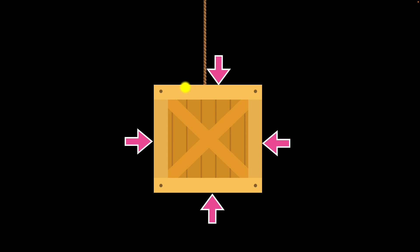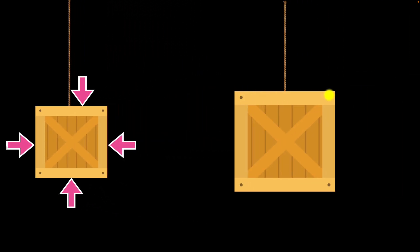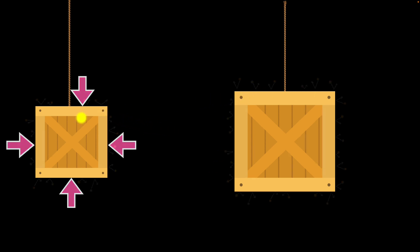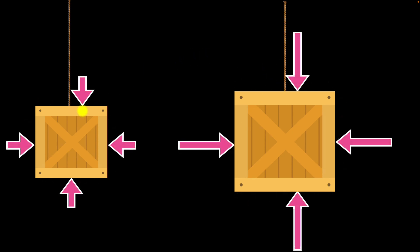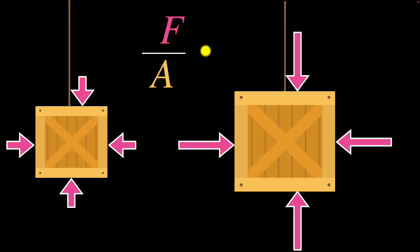To answer that question, let's think of a bigger box. Imagine the surface area here was twice as much as the surface area there. Then since we have twice the area, the number of molecules bumping per second would also be twice as much, because you have twice the area and there are air molecules everywhere. So the amount of force must be twice as much. If the surface area was three times as much, the force must be thrice as much. In other words, the force that the air molecules are exerting on the box is proportional to the surface area — so force per area is a constant. That is the key characteristic of the force exerted by air, or in general, any fluid.